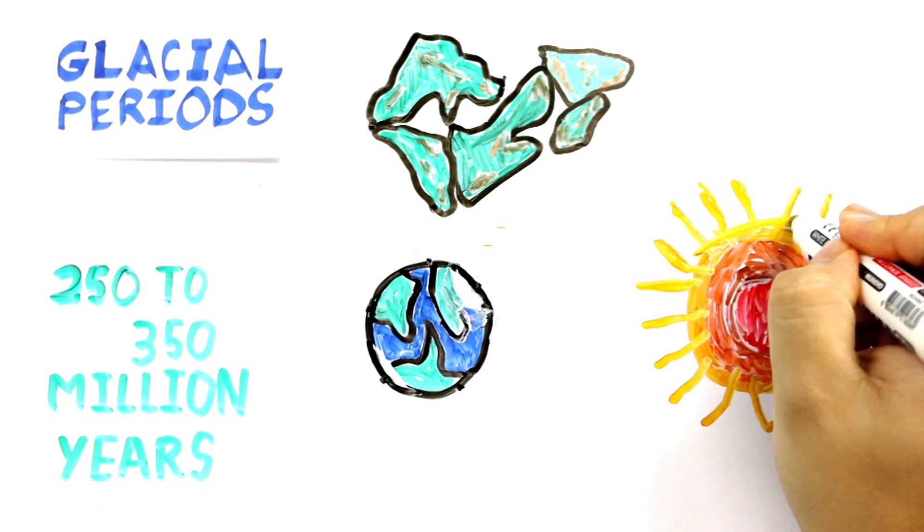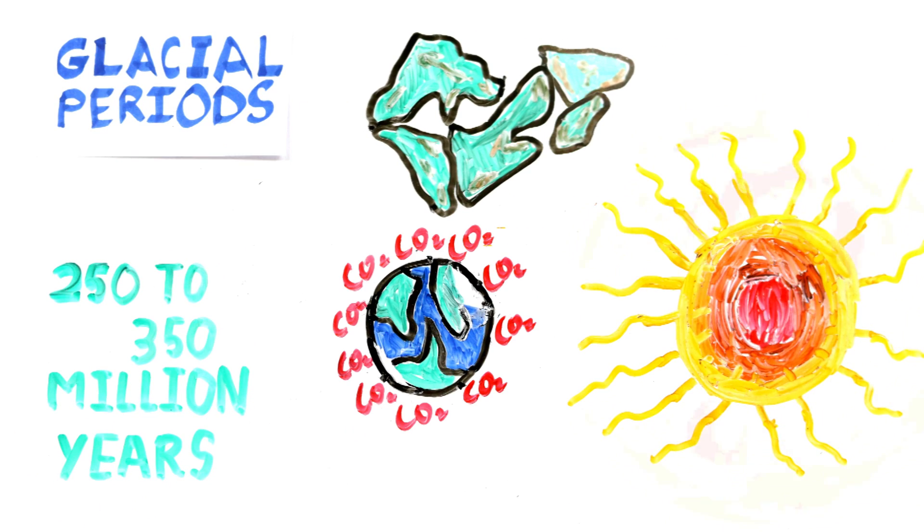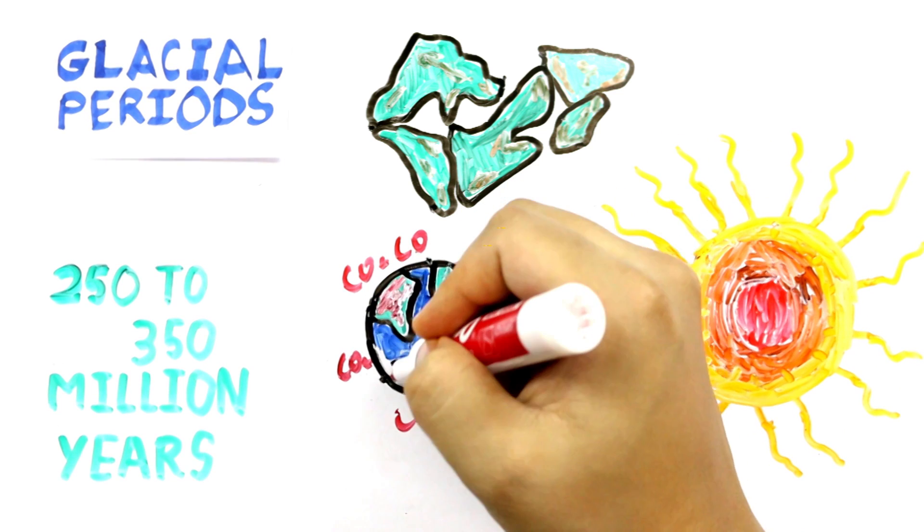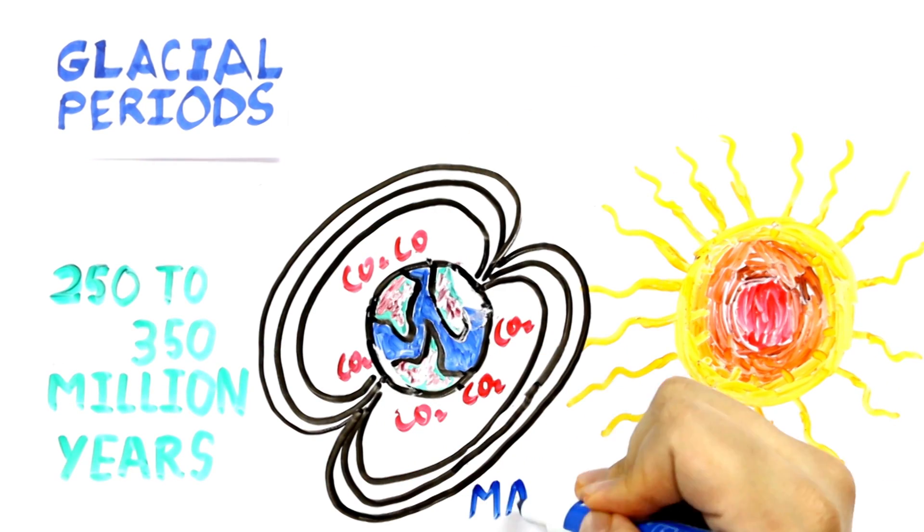The luminosity of the sun will steadily increase, resulting in a rise in the solar radiation reaching the Earth. This will cause a higher rate of weathering of silicate minerals, which will cause a decrease in the level of carbon dioxide in the atmosphere.